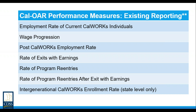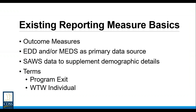Today's training will focus on the existing reporting measures group — these are the measures that utilize EDD and MEDS data. This includes the employment rate of current CalWORKs individuals, wage progression, post CalWORKs employment rate, rate of exits with earnings, rate of program re-entries, rate of program re-entries after exit with earnings, and intergenerational CalWORKs enrollment rate. These are all outcome measures, meaning the information gleaned will help the state define and measure program success at a high level across counties.